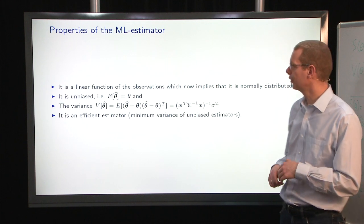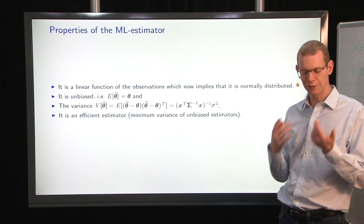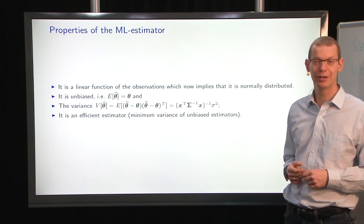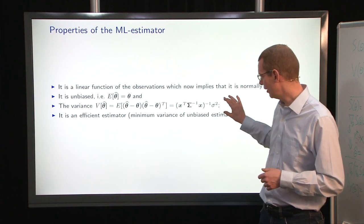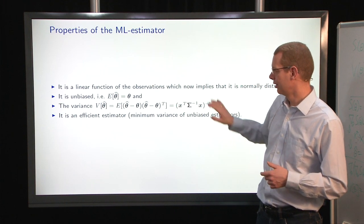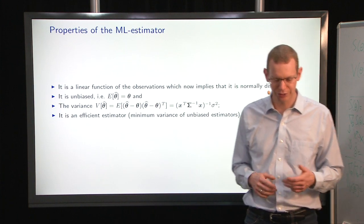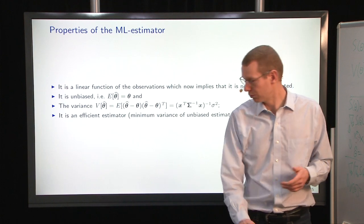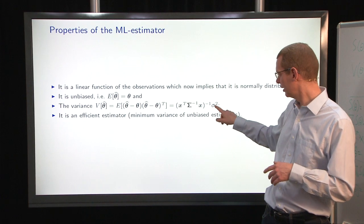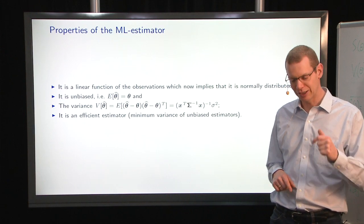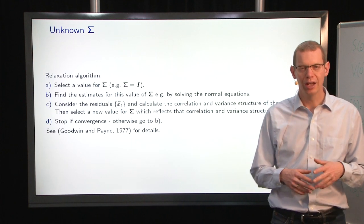Now, the properties of the maximum likelihood estimator that we saw just before is, again, a linear function of the observation because it's the same estimator as the ordinary least squares estimator. The estimator is unbiased. We have the variance estimator here. Same thing, it's efficient as well, saying it's a minimum variance of the unbiased estimators. So, and you can correct the estimated bias in sigma by not dividing by n, but divided by n minus p to get the ordinary least squares, which is BLUE.